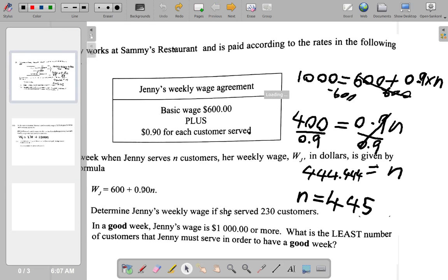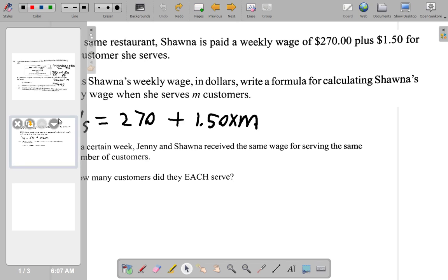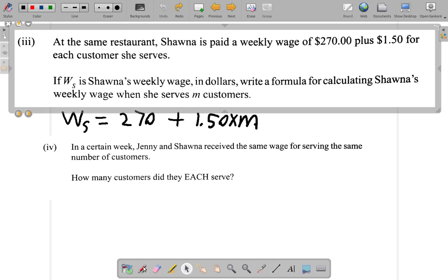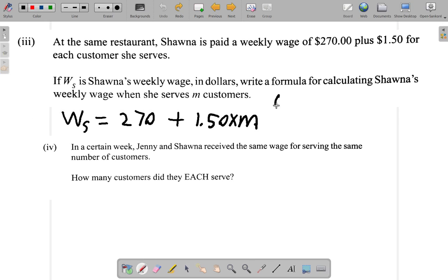What was Shawna's formula again? Shawna's formula was 600 plus 0.9N. So you have two formulas here: 600 plus 0.9N for Shawna's weekly wage.